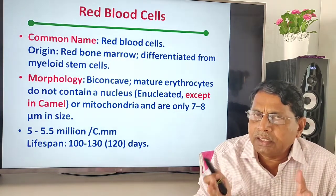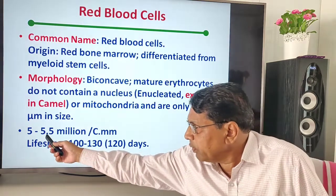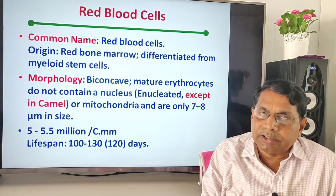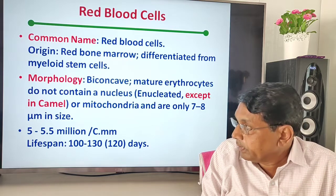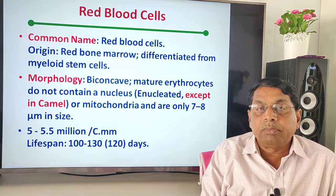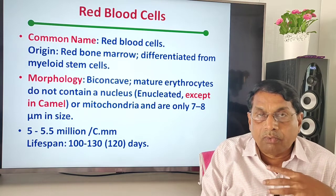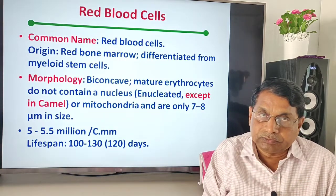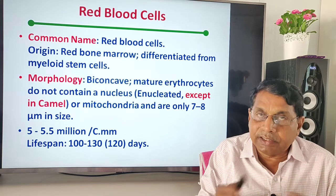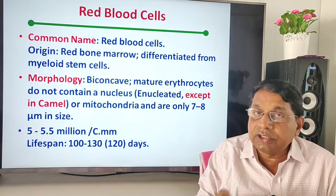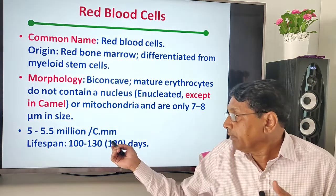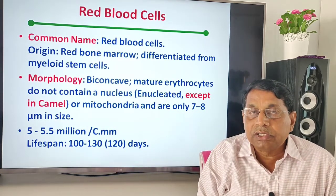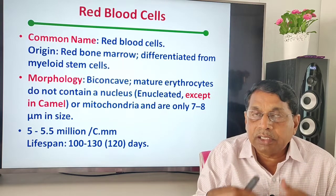In a healthy person, a typical blood count is 5 to 5.5 million RBCs per cubic millimeter. Their lifespan is generally 100 to 130 days, depending upon age, health condition, and gender, but the average is 120 days. After 120 to 130 days, they degenerate, go to the spleen, and are removed.